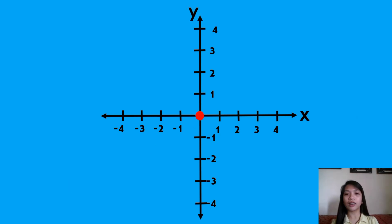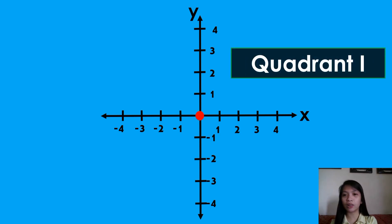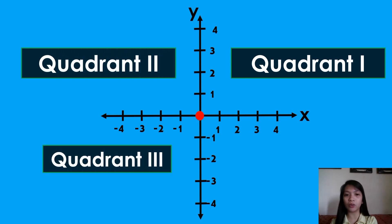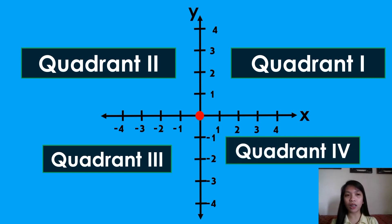The Cartesian plane is divided into four regions called quadrants. The upper right region is called Quadrant 1, the upper left region is Quadrant 2, the lower left region is Quadrant 3, and the lower right region is Quadrant 4.